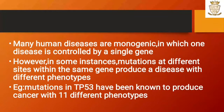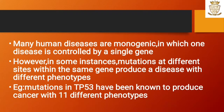Many human diseases are monogenic, in which one disease is controlled by a single gene. However, in some instances, mutations at different sites within the same gene produce a disease with different phenotypes. For example, mutations in TP53 have been known to produce cancer with 11 different phenotypes.